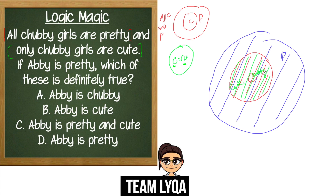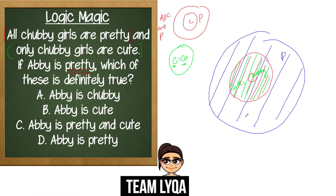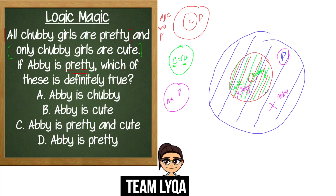The next step: Abby is pretty. Where do we place Abby? Since Abby is pretty, she's inside the pretty circle — the big blue circle. We'll mark her in magenta. Now, if I place Abby here in the outer part of the pretty circle, is she pretty? Yes, because she's inside the pretty circle. If I place her here in the inner part, is she still pretty? Yes, because she's still inside the blue circle.